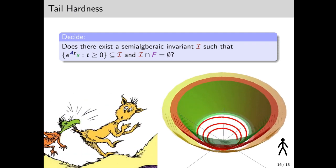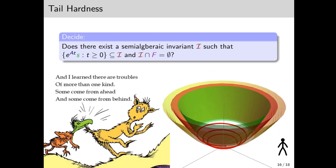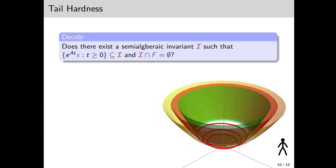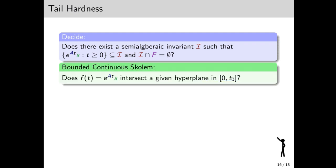And as Dr. Seuss says, And I learned there are troubles of more than one kind. Some come from ahead, and some come from behind. As we now show, deciding whether there is a semi-algebraic invariant that contains the entire orbit is hard with respect to a certain open problem in transcendental number theory.